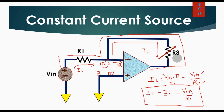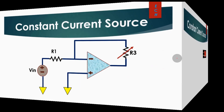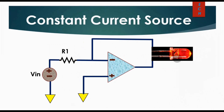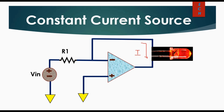Now we will understand the real-time application of this circuit. This is a constant current LED driver using an operational amplifier. As we already saw, the current flowing through the LED will remain the same, so if the current is constant, the LED will illuminate with the same intensity.